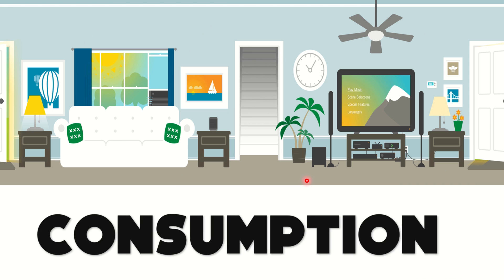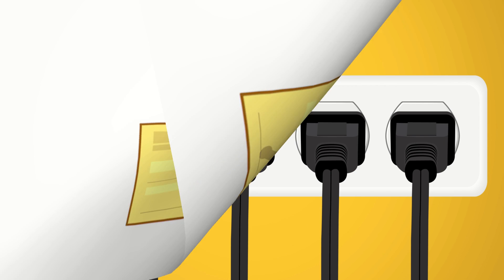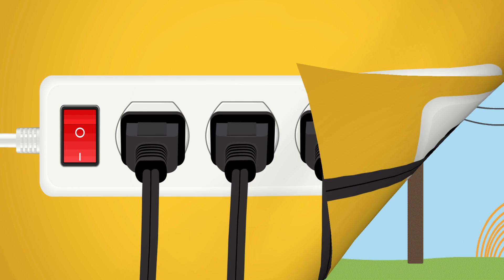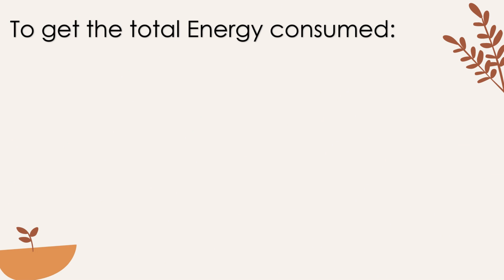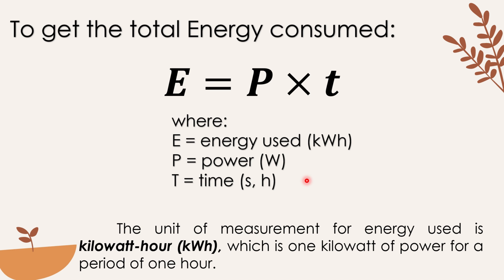Now let us talk about consumption. How is it computed? How much did you and your family pay for electricity this month? It depends on how much electrical energy you used. One thing to consider is how much electrical power was consumed, and also the time of usage. To get the total energy used, multiply the power consumption by the duration of use. Our formula is: E = P × T, where E is the energy used in kilowatt-hours, P is power in watts, and T is time in seconds or hours. The unit of measurement for energy used is kilowatt-hour, which is 1 kilowatt of power for a period of 1 hour.